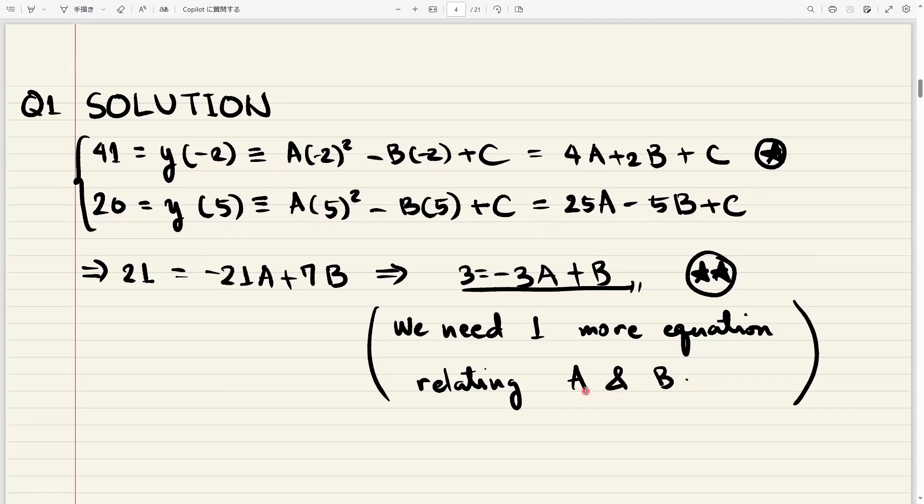And why do we need it to relate a and b? It's because we can get rid of c here. Notice that if we subtract 41 minus 20, we get 21, 4a minus 25a is minus 21a, 2b minus negative 5b, you get 7b, and c minus c is just zero. So we got rid of c, and now we're left with an equation that is in terms of a and b. And so we just need one more equation that relates a and b. Also notice that we were able to reduce this into this by dividing both sides by 7.